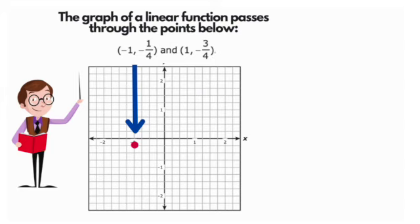And let's go ahead and plot the other one. We have positive 1, negative 3 fourths. That will end up in quadrant 4.